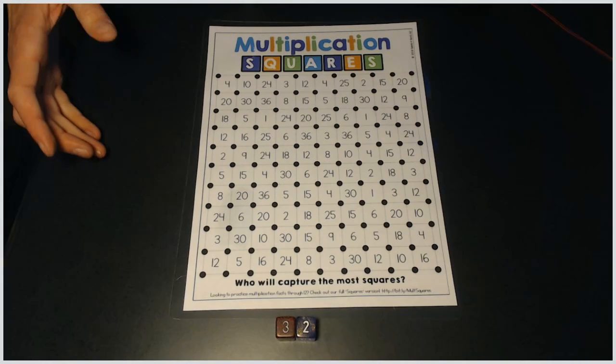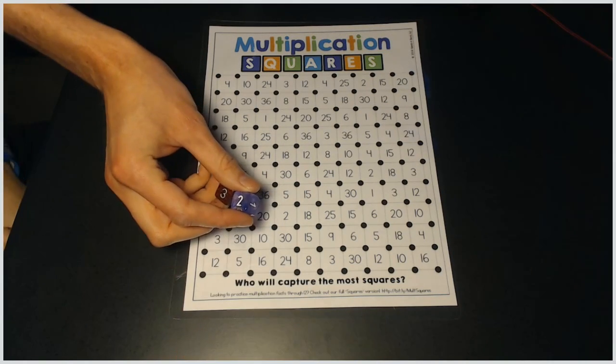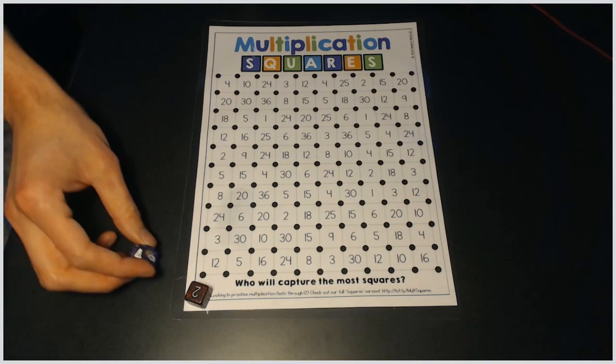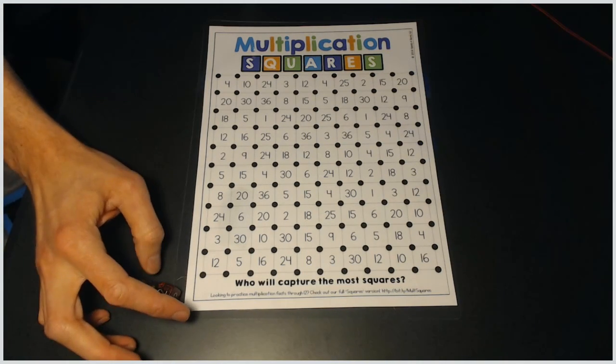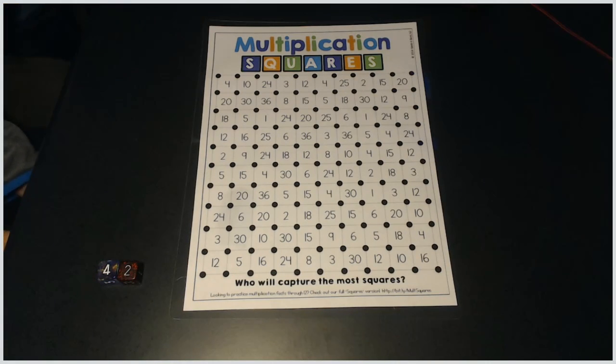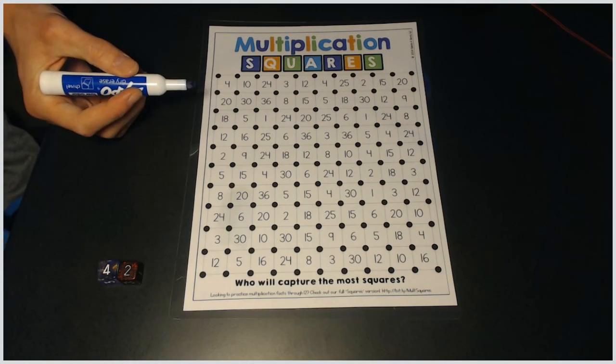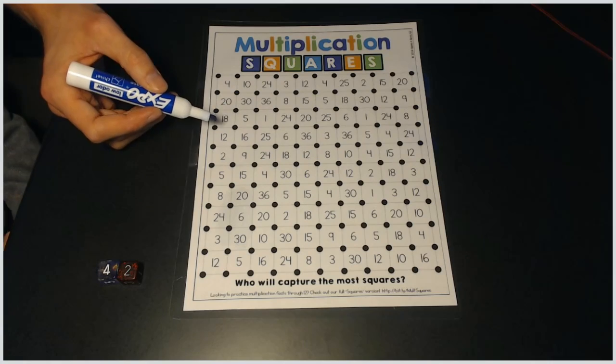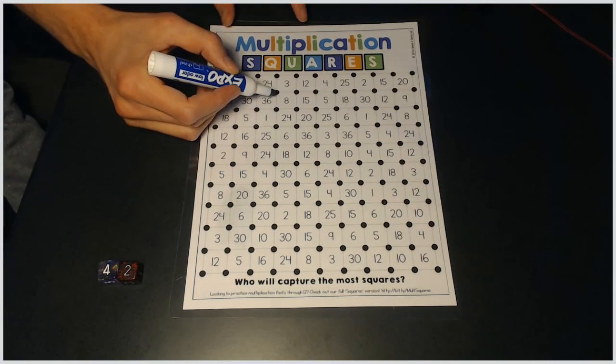So on each of our turns, buddy, what we're going to do is take the two dice, and we're going to roll them. Okay, I got four and two. What's four times two? Eight. Eight. So now I can look for an eight on the board, and I can put one line around the box. Not all the way around, just connecting two dots somewhere around an eight. So let's find an eight that I want to play on. That one? Let's play there.